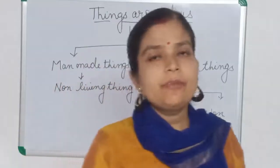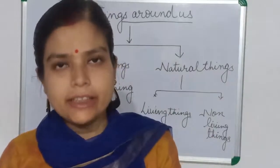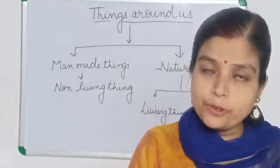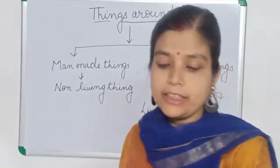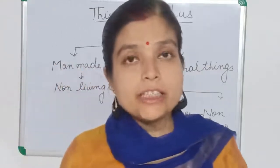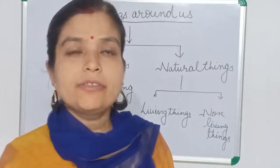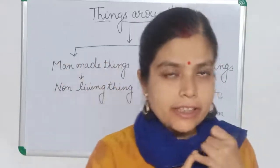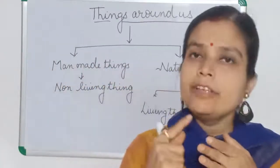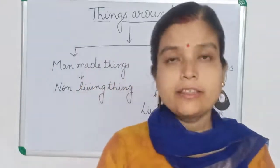So you can differentiate between living and non-living things. The characteristics of living things are: living things can grow, living things need food, living things move, living things feel, living things breathe, and living things reproduce. These are the characteristics of living things.